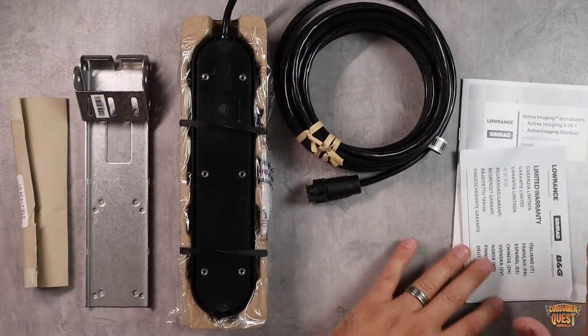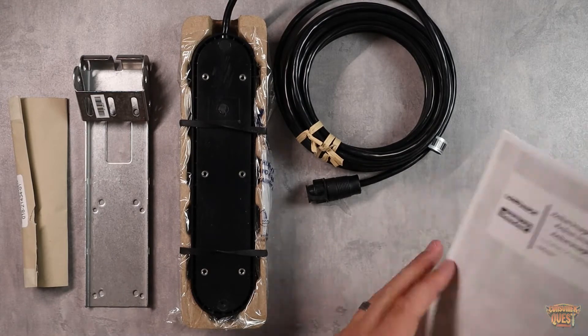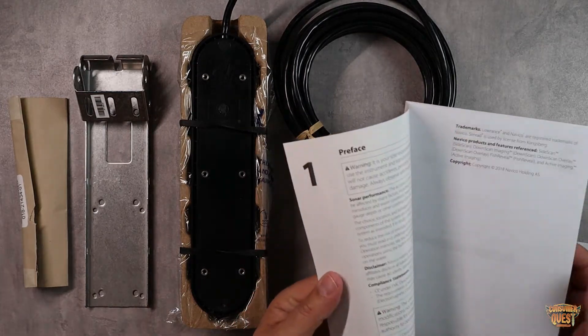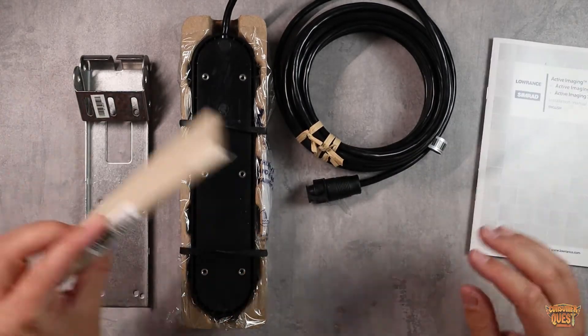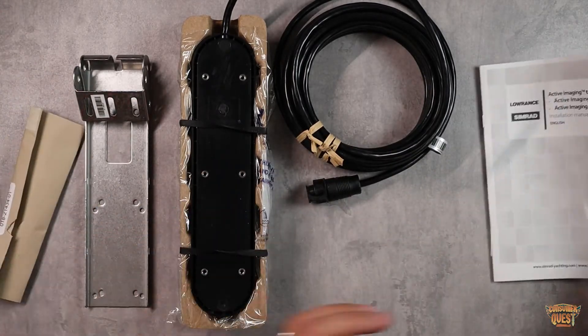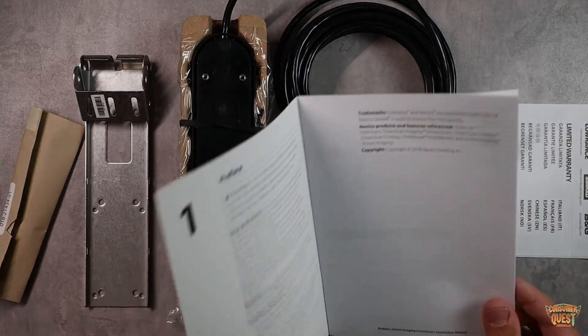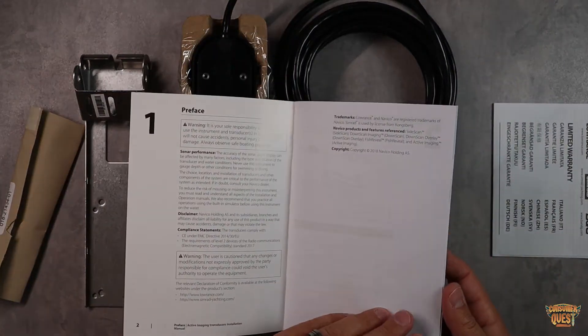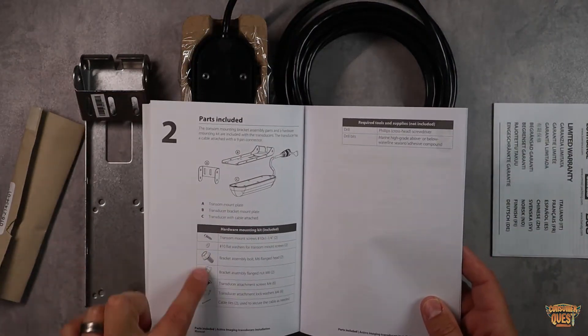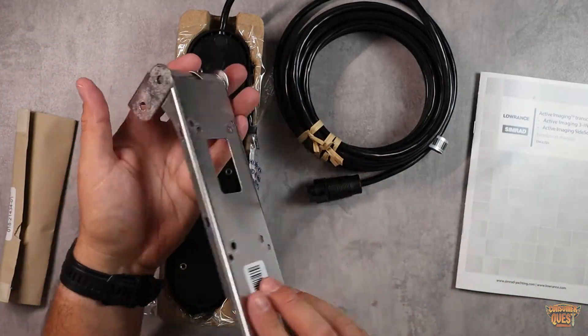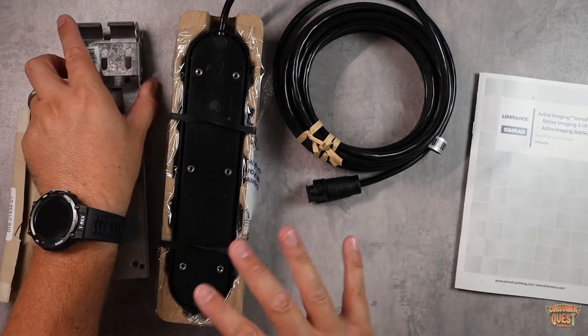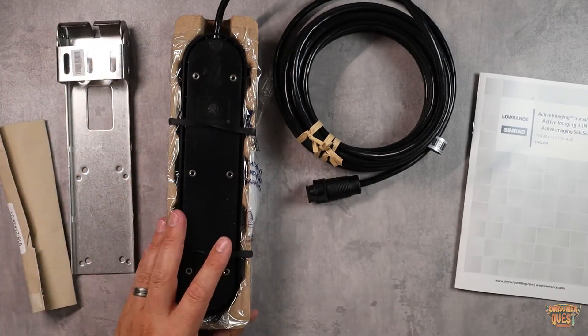Now in the packaging, you get all of your documentation, basically your active imaging transducer. This is your instruction manual, how to mount it, where to mount it, some of the details behind it. You get all your mounting hardware. It is broken down individually, exactly what you get inside for the mounting hardware. It kind of walks you through what that is here. You get the actual mounting bracket itself that can be mounted. This is going to be mounted directly to your boat or wherever you're going to mount this.